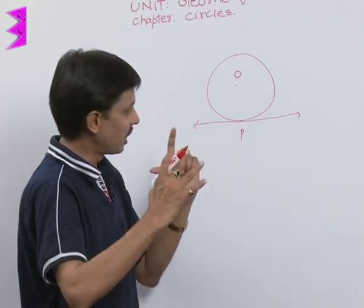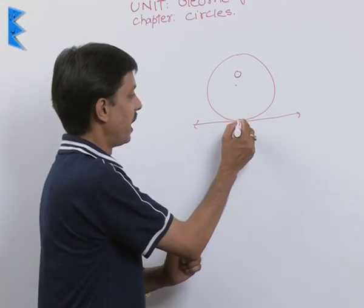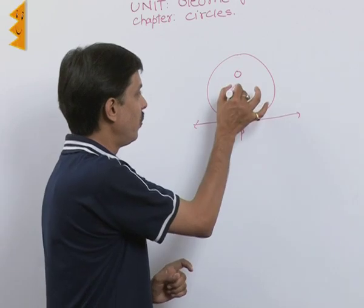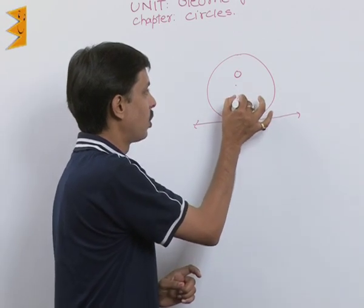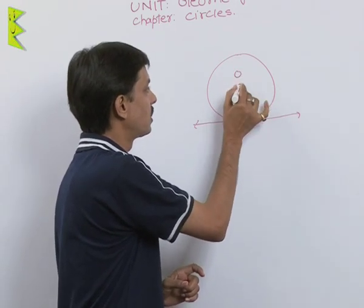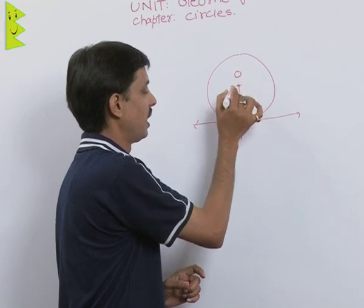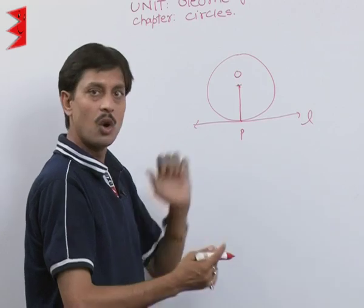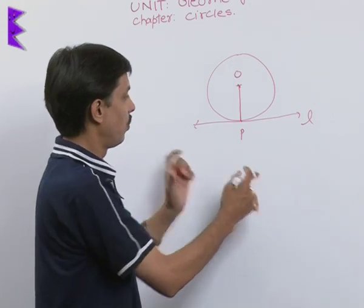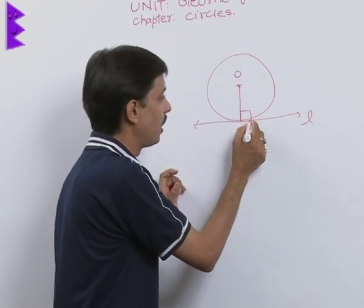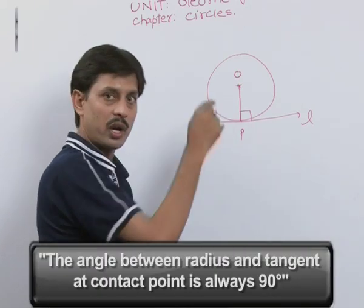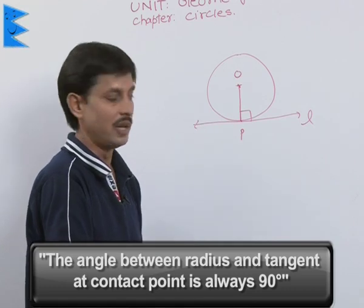Now the question raises: how can we say that this is the tangent at P? If we join the contact point of the circle to its center - when it is joined to the contact point at P of the tangent L - we want to show that this angle is 90 degrees. The angle between radius and tangent at the contact point is always 90 degrees.